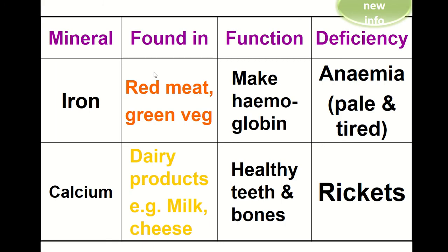Iron is found in red meat and green vegetables, and it makes a pigment called hemoglobin, which is very important for our blood to be able to carry oxygen. If we do not have enough iron, we become anemic, and you can tell someone is anemic if they're pale and tired, as one of the signs.